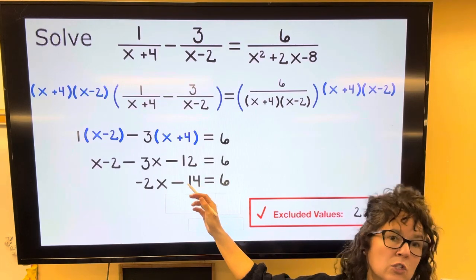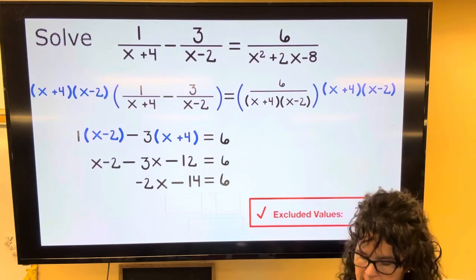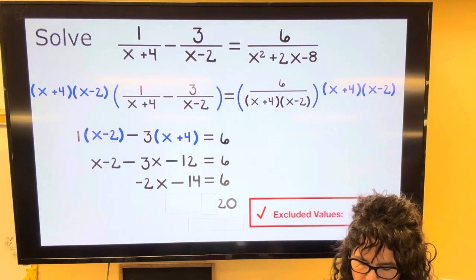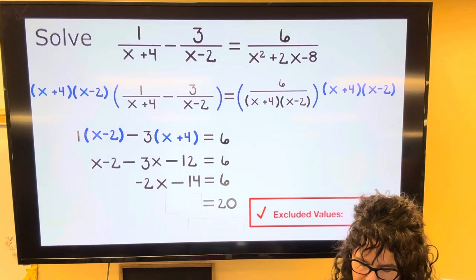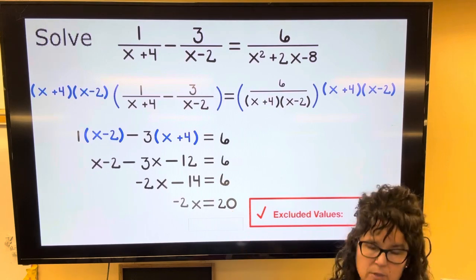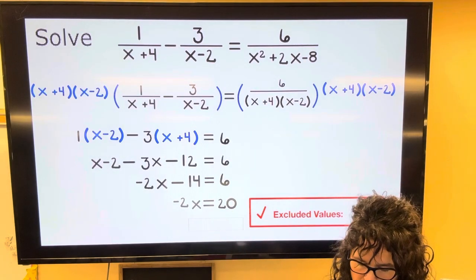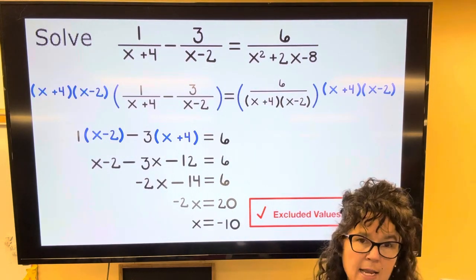Move letters to one side, numbers to the other. So if I add 14, I'm going to get 20. And on the left side, I still have negative 2x. Divide both sides by negative 2 and I end up with negative 10.